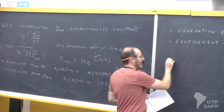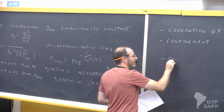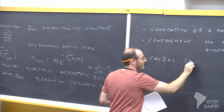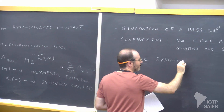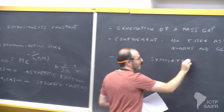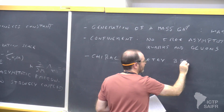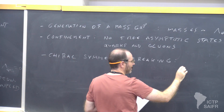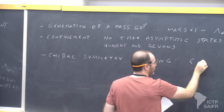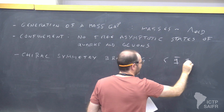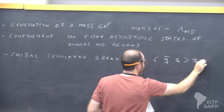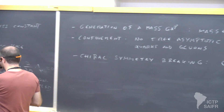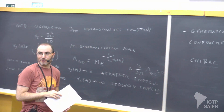Even if we have massless quarks and massless gluons, at strong coupling all the degrees of freedom are gapped with masses proportional to this scale. There is the phenomenon of confinement — there are no free asymptotic states of quarks and gluons. So we cannot observe them in colliders. Another non-perturbative effect at strong coupling is chiral symmetry breaking, which means there is a quark condensate that breaks part of the flavor symmetry spontaneously.